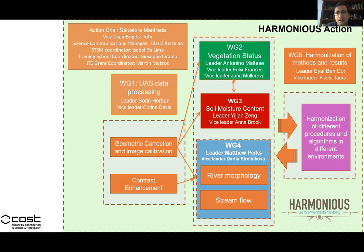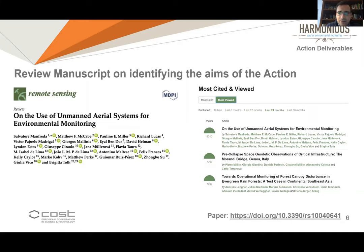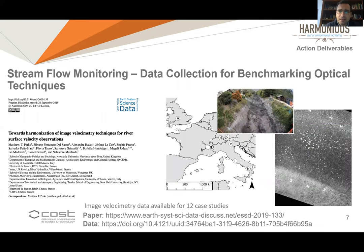Within the last two years we have obtained a significant number of achievements. A number of deliverables have been obtained. The first is a review paper identifying the aims and scope of the action in a manuscript from 2018. I'm proud to say this is one of the top-viewed articles in Remote Sensing in the last two years.